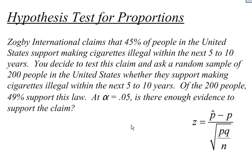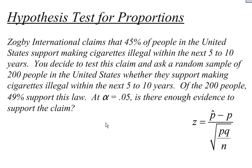Here's our example. Zogby International claims that 45% of people in the United States support making cigarettes illegal within the next 5 to 10 years. You decide to test the claim and ask a random sample of 200 people in the United States whether they support this. Of the 200 people, 49% support this law. At alpha equals 0.05, is there enough evidence to support the claim?